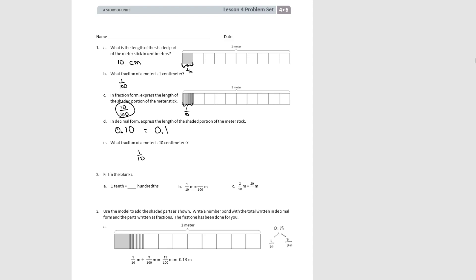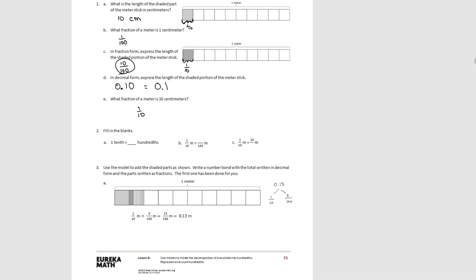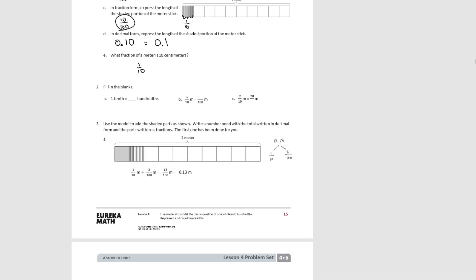For number two, Part A: one tenth is ten hundredths. Written in fraction form, one tenth equals ten hundredths, and two tenths equals twenty hundredths.